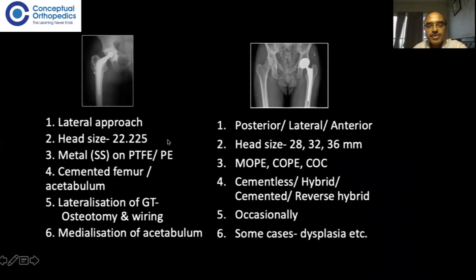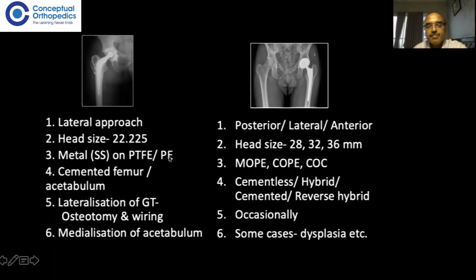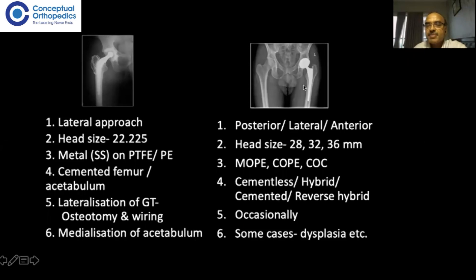The head size in Charnley was 22.25mm, whereas modern-day arthroplasty uses 28, 32, or 36mm. The bearing surface in Charnley was metal (stainless steel) on polytetrafluoroethylene initially, but this failed, so he switched to metal on polyethylene. Modern-day arthroplasty uses metal on polyethylene, ceramic on polyethylene, or ceramic on ceramic. Fixation in Charnley was cemented femur and cemented acetabulum, whereas modern-day arthroplasty may be cementless, hybrid (uncemented acetabulum, cemented femur), fully cemented, or reverse hybrid (cemented acetabulum, uncemented femur).